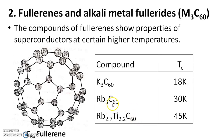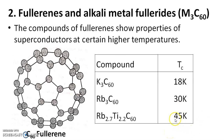Alkali metal fullerides show superconducting properties. For example, K3C60 — that is potassium-doped fullerene — has a transition temperature of 18 Kelvin. Rb3C60 — rubidium-doped fullerene — has a transition temperature of 30 Kelvin. Rubidium-titanium doped fullerene has a transition temperature of 45 Kelvin. Fullerene itself is a superconducting material, and when doped with alkali metal, its superconducting property increases.